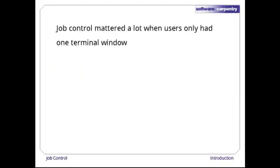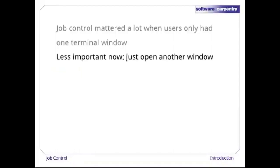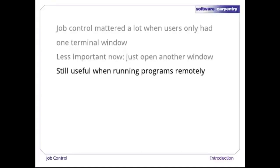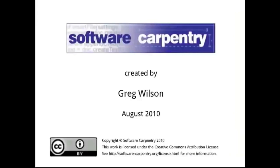Job control was important when users only had one terminal window at a time. It's less important now — if we want to run another program, it's easy enough to open another window and run it there. However, these ideas and tools are making a comeback as they're often the easiest way to run and control programs on remote computers elsewhere in the network. In a future episode, we'll take a look at how we can do that securely.